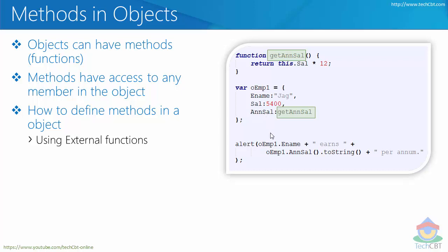You access methods the same way you access other members or properties. For example, OEMP1.ename accesses the ename property, and you can access salary similarly. To execute a method, you say object.annualSalary with parentheses. Without parentheses you are just assigning the function definition to another variable, not executing it. With parentheses it executes on the spot.